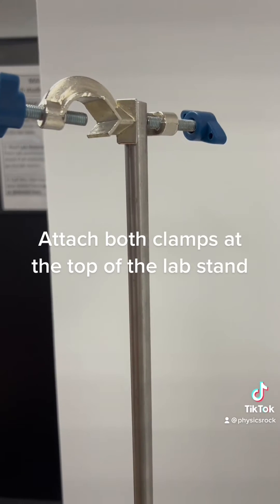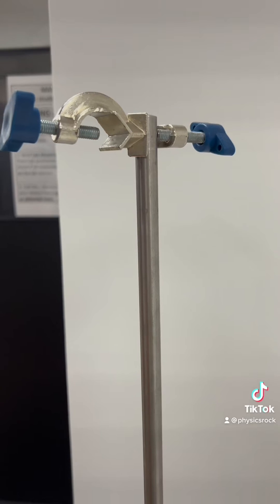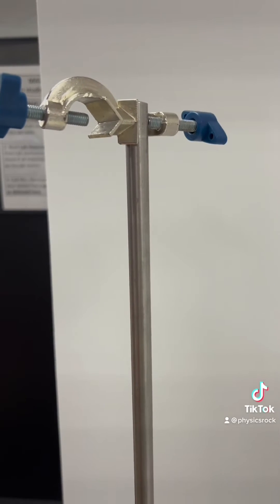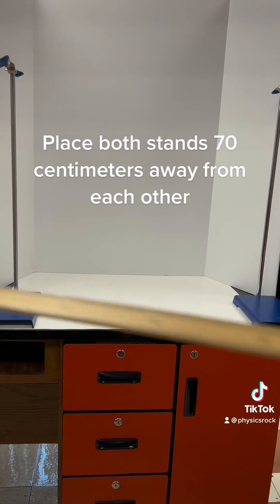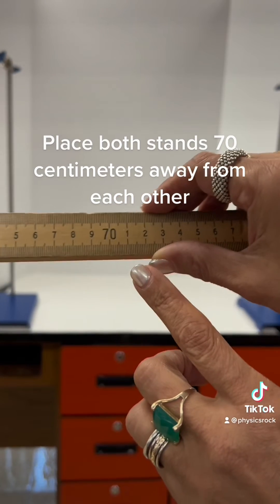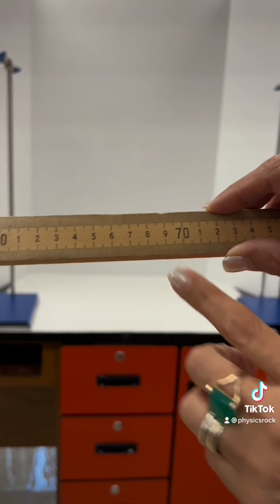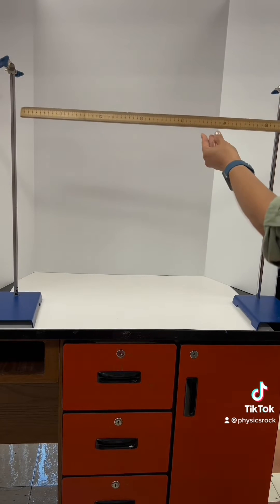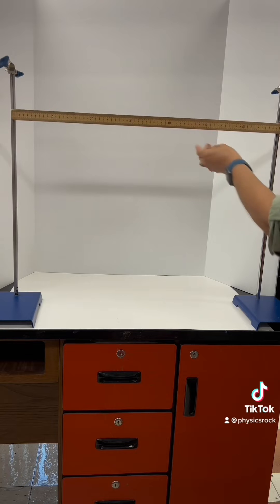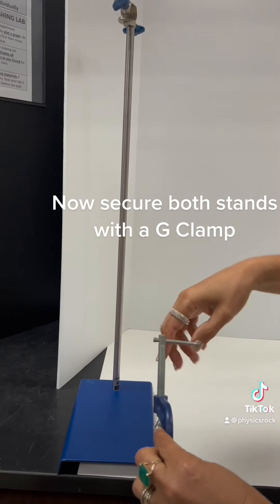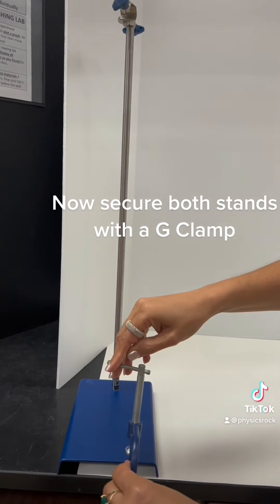Attach both clamps at the top of the lab stand. Place both stands 70 cm away from each other. Now secure both stands with a G-clamp.